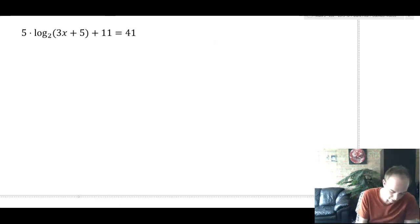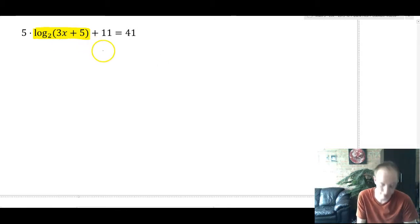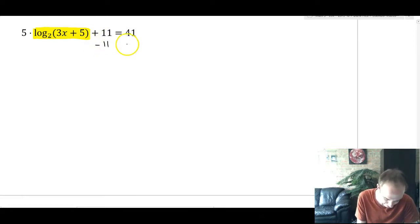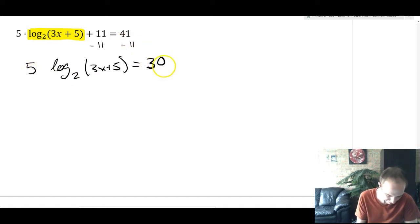Okay, with the last problem, we first have to isolate the log. And also I notice there's some stuff going on inside the log. So there's going to be a number of steps here. Hopefully the numbers will be a little smaller than 3^16 though. So first let's subtract 11 and see what we get. So then we get 5 log base 2 of (3x + 5) = 30. Oh, that's really nice. I see that 5 and that 30. So let's divide by 5.